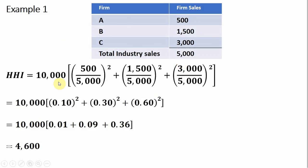So here's the $10,000. The first firm has $500 of sales in an industry with total sales of $5,000. We're squaring that. Firm B has $1,500 of sales in an industry with $5,000 of sales in total. We square that, and we do the final thing for the third firm.